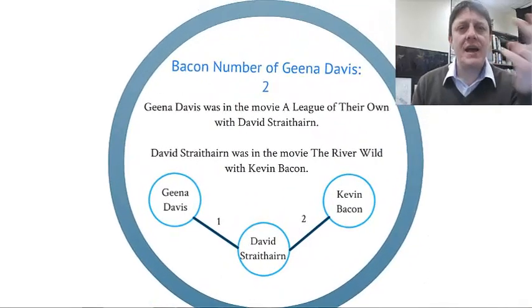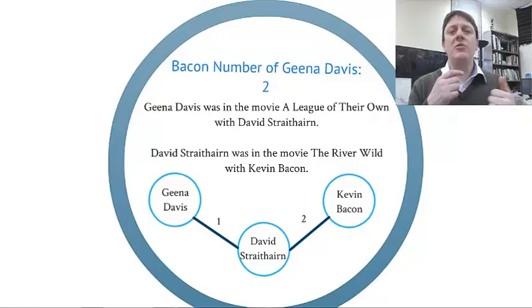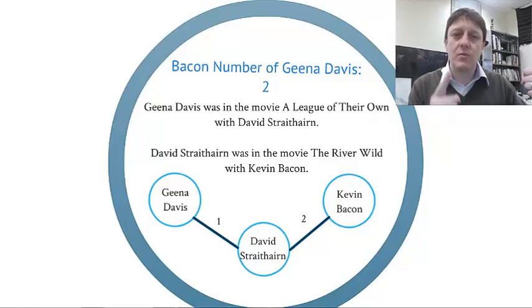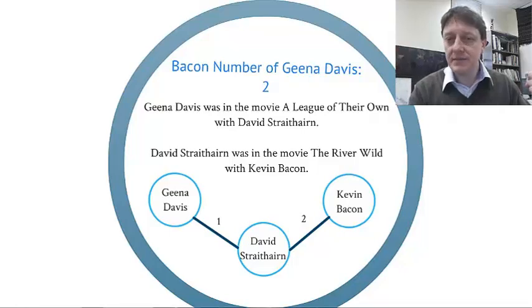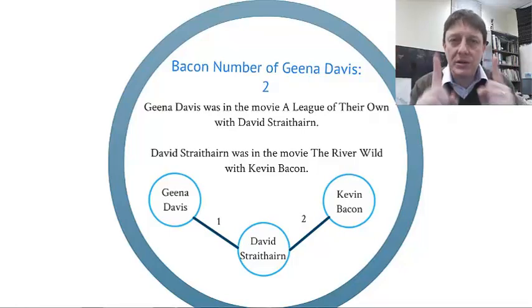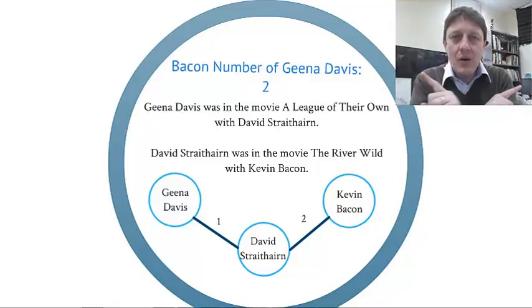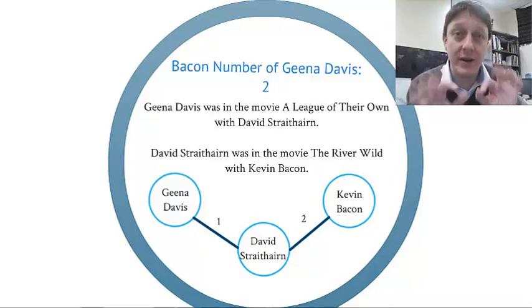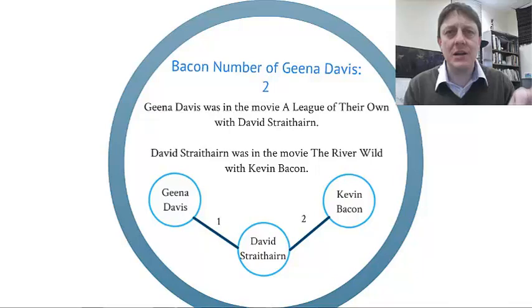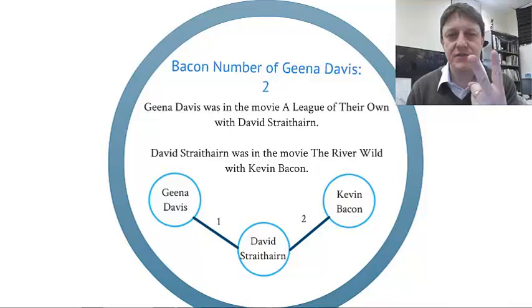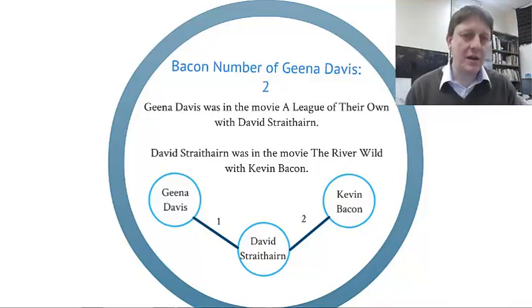Another example: Geena Davis has a Bacon number of two. She was in the movie A League of Their Own with David Strathairn — 'in a movie with' is a tie, a tie to David Strathairn. David Strathairn was in the movie The River Wild with Kevin Bacon, so that's two. And importantly, this is the geodesic distance, meaning it's the shortest available distance. Geena Davis has not been in a movie with Kevin Bacon, so the network distance — the shortest possible distance between the two people in this network — is two.